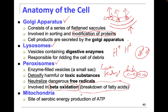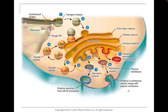The mitochondria is the site of aerobic energy production — ATP, adenosine triphosphate. This shows the rough ER synthesizing a protein, which is then transported in a protein vesicle into the Golgi complex.